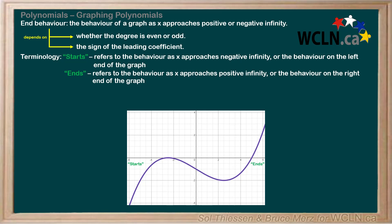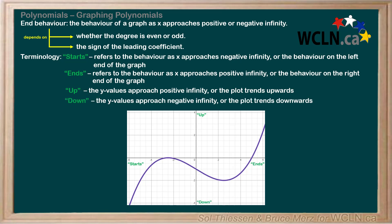If we say that a polynomial starts or ends up, we mean that the y values approach positive infinity, or the plot trends upwards. If we say that a polynomial starts or ends down, we mean that the y values approach negative infinity, or the plot trends downwards. Applying this terminology to describe the end behavior of our example, we would say that this graph starts down and ends up.